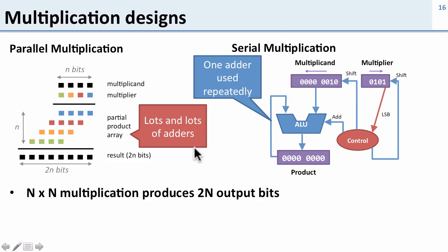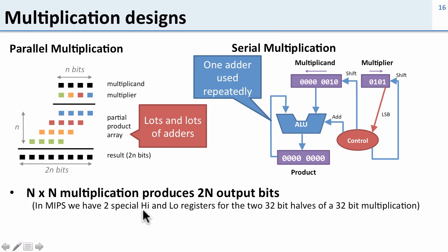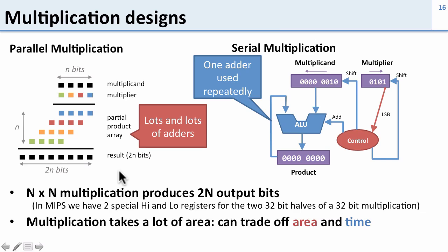In both cases our n-by-n multiplication produces 2n output bits. So if we had a 32-bit register and a 32-bit register we're going to get 64 bits out the other end. In MIPS we deal with this by having special high and low registers for getting the two halves of our 32-bit result. Now multiplication takes a lot of area — in parallel we need lots of adders. We can trade off that area for time: in serial we only have one adder but we have to go through the loop many times.